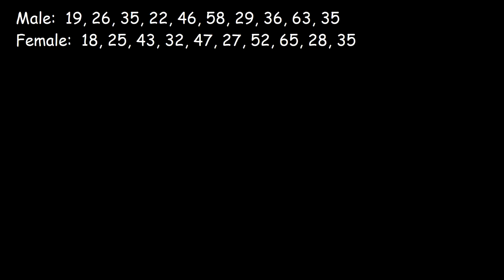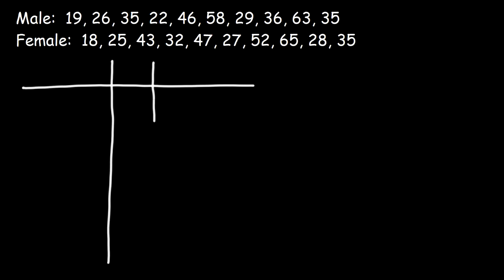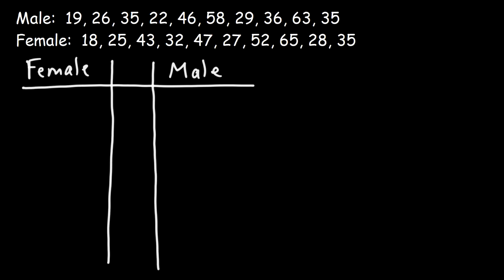In this video, what we're going to do is make a side-by-side stem and leaf plot. We're given the ages of males and females, and we're going to make basically a three-column table. On the left side, we're going to put the ages of all the females, and on the right side, the ages of the males. In the middle, this is going to be our stem, and the left and right sides will be the leaf part of our stem and leaf plot.